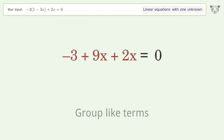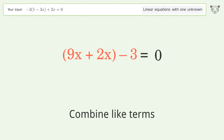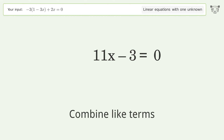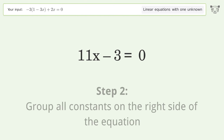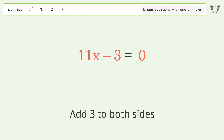Group like terms. Combine like terms. Group all constants on the right side of the equation — add 3 to both sides.